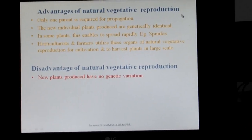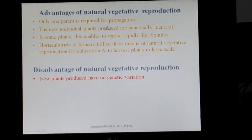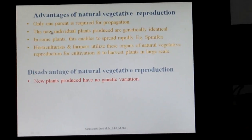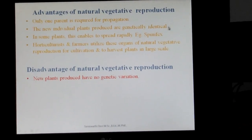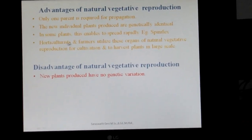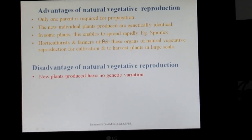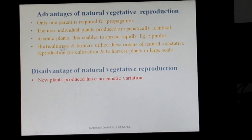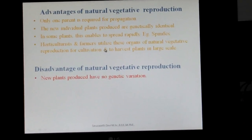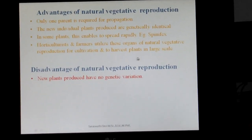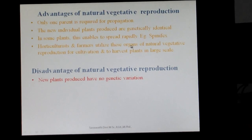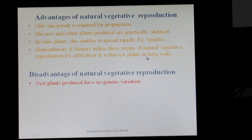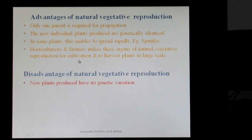Natural vegetative reproduction requires only one parent. When individuals are produced this way, all individuals are genetically identical. Some plants spread rapidly and easily spread the species, for example Phoenix. Natural vegetative reproduction is used in many fields, for example horticultural farming. Using a single organ with desirable characters, many plants can be obtained from that organ and used for cultivation on a large scale.